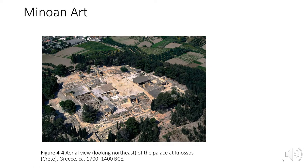Minoan artwork is found on the island of Crete. The city of Knossos was the legendary home of King Minos. Knossos is where the hero Theseus hunted the bull-man Minotaur in his labyrinth. According to the legend, the king's daughter helped Theseus find his way out of the maze by giving him a spindle of thread to mark his path.